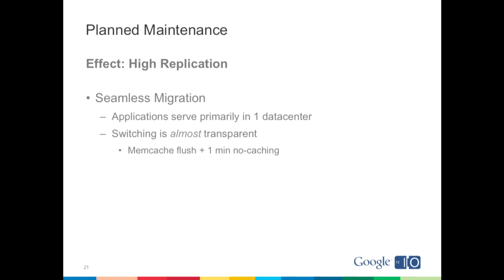The switching is almost transparent. What is noticeable is a flush of Memcache and approximately one minute where you can read from Memcache but it's always empty, and writes just pretend to succeed. The primary reason we only serve HR applications out of a single data center is that Memcache is a very fast API — you get responses back in an order of milliseconds. That's because we don't replicate it to the other data centers. If we did, the transmission time would make Memcache a very slow API. Unfortunately, even Google is limited by the speed of light.